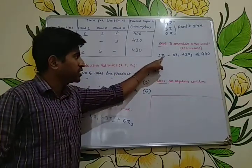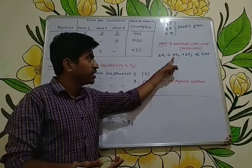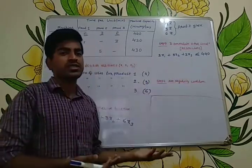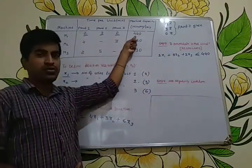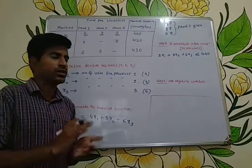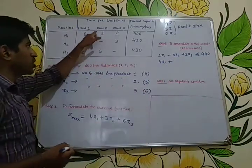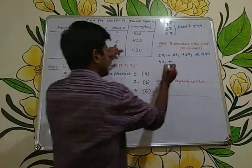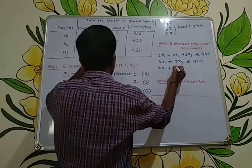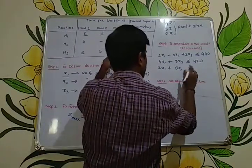If we manufacture x1 quantities we require 2 times x1 minutes; if we manufacture x2 quantities we require 3 times x2 minutes. Total time for machine M1 must be at most 440 minutes. Similarly for machine M2: 4x1 + 3x3 ≤ 420 minutes, since product 2 doesn't require machine M2. And for machine M3: 2x1 + 5x2 ≤ 430 minutes, since product 3 doesn't require machine M3.